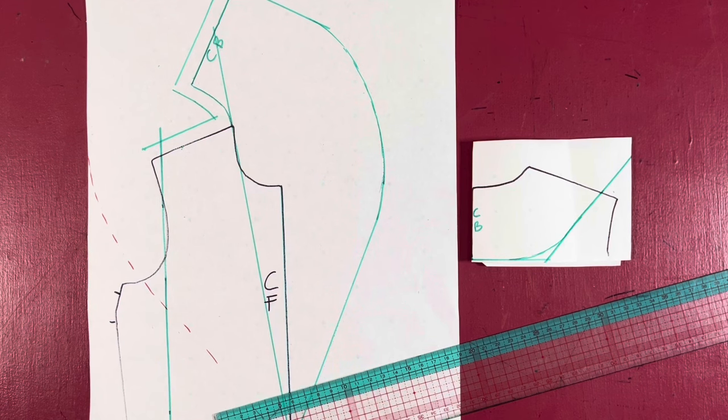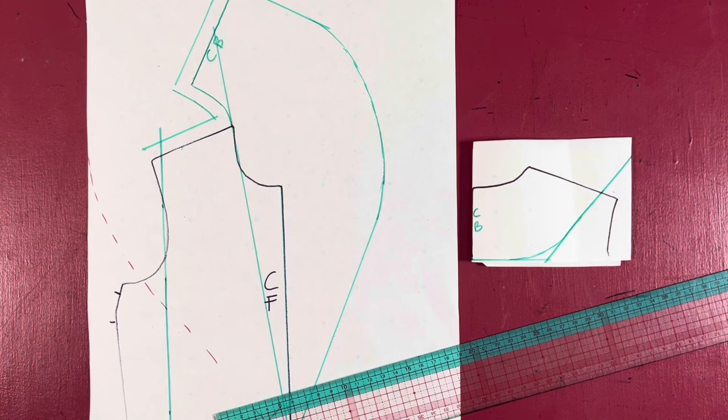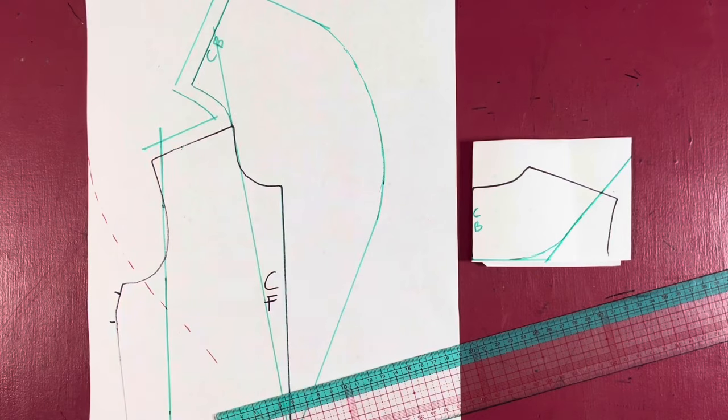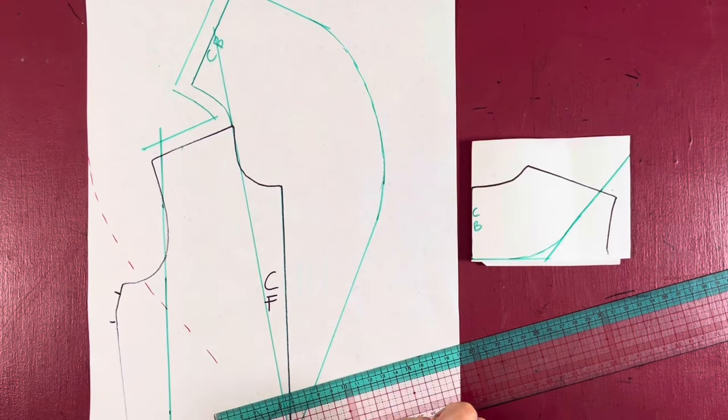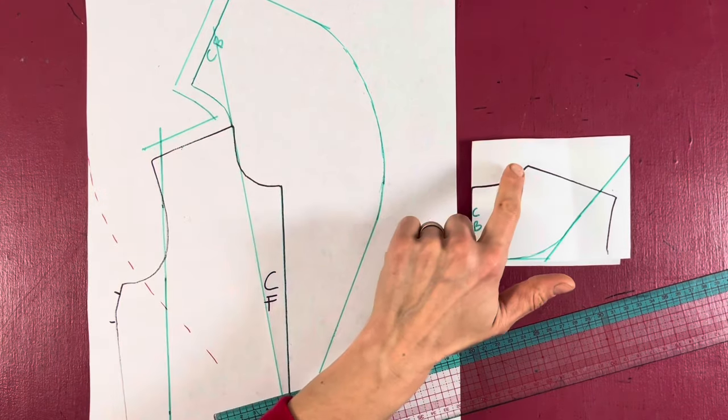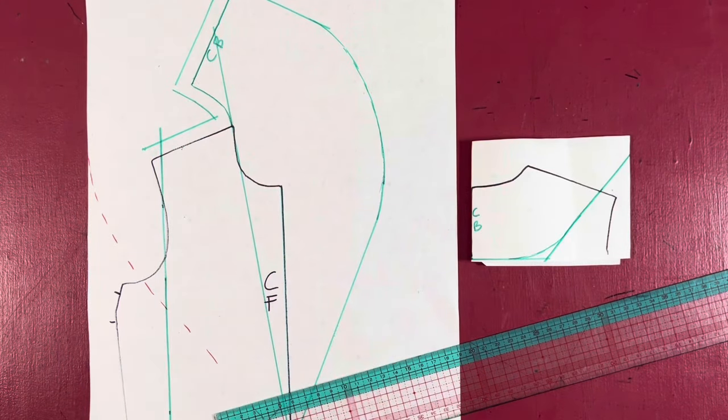To stitch it together, it works exactly as any other shawl collar. You stitch your center back together on your front piece, then you stitch your shoulders together, and finally you stitch your back necklines together. I hope you enjoyed this drafting tutorial.